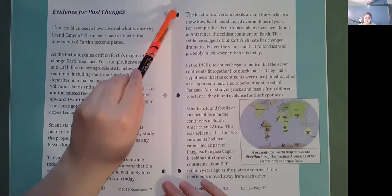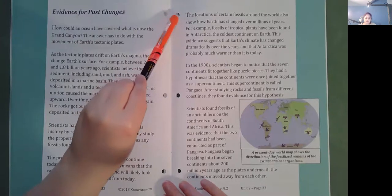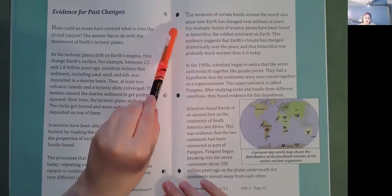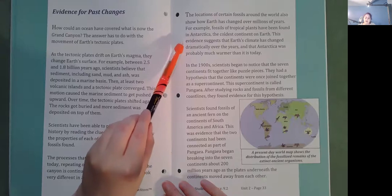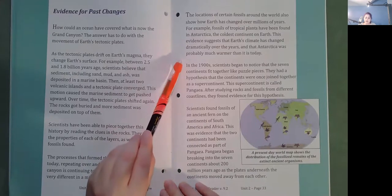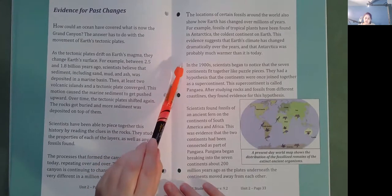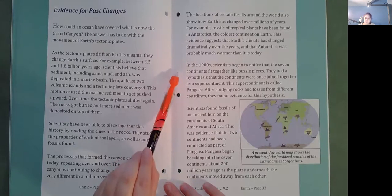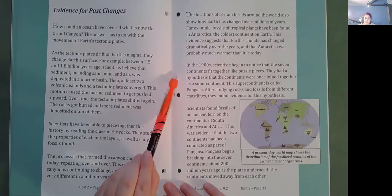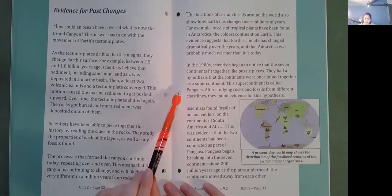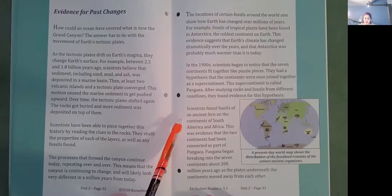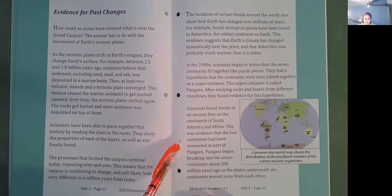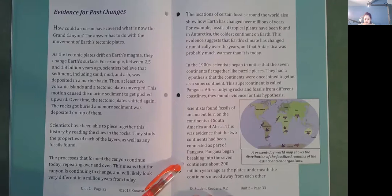The location of certain fossils around the world also show how Earth has changed over millions of years. For example, fossils of tropical plants have been found in Antarctica, the coldest continent on Earth. This evidence suggests that Earth's climate has changed dramatically over the years, and that Antarctica was probably much warmer than it is today. In the 1900s, scientists began to notice that the seven continents fit together like puzzle pieces. They had a hypothesis that the continents were once joined together as a supercontinent. This supercontinent is called Pangaea. After studying rocks and fossils from different coastlines, they found evidence for this hypothesis. Scientists found fossils of an ancient fern on the continents of South America and Africa. This was evidence that the two continents had been connected as part of Pangaea. Pangaea began breaking into seven continents about 200 million years ago, as the plates underneath the continents moved away from each other.